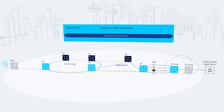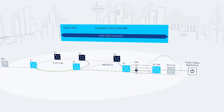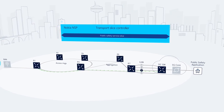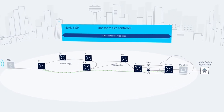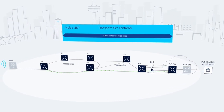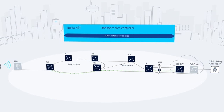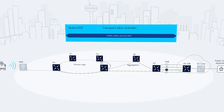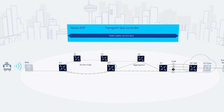The routers in the path will allocate resources to this service to create the transport section of the end-to-end service slice. This full automation not only saves operational costs, but also provides a fast and accurate service setup.